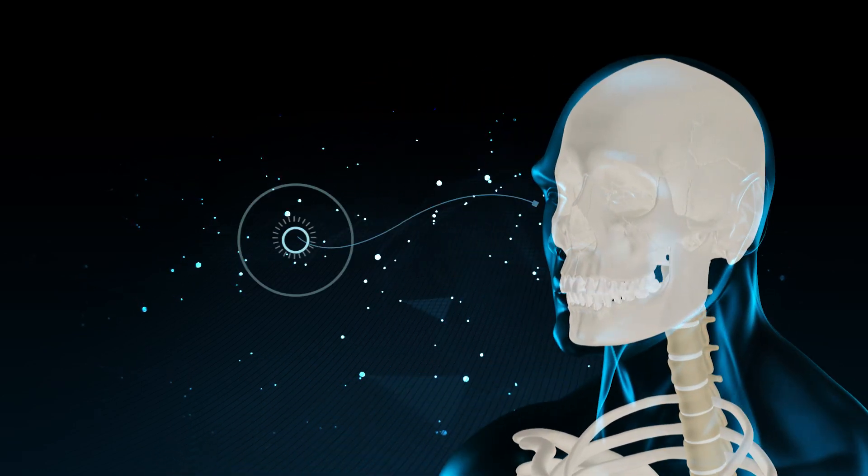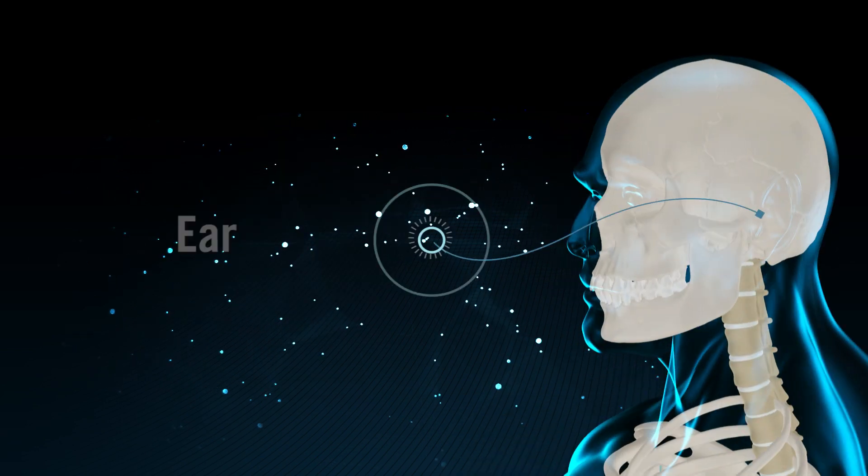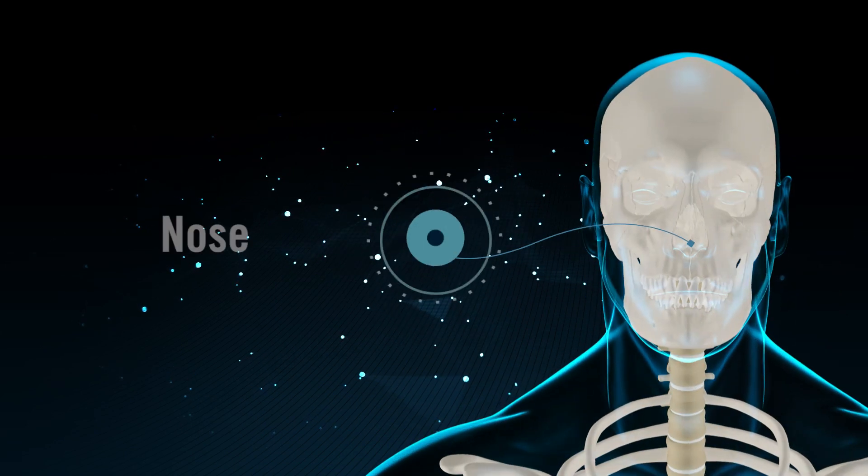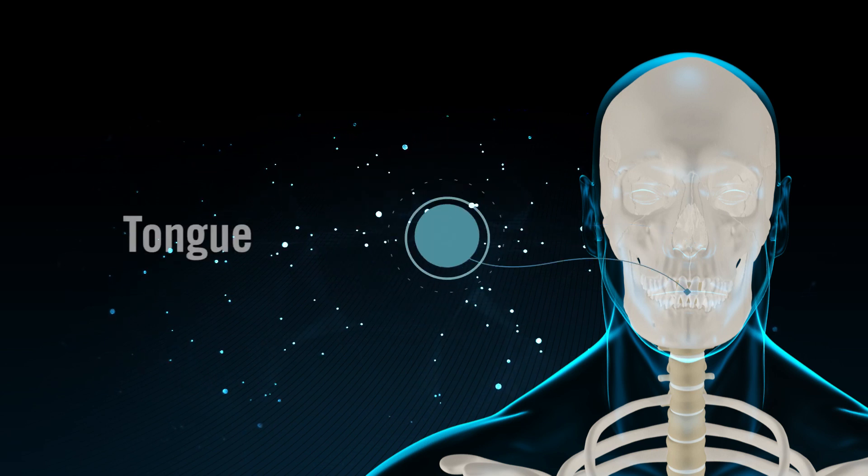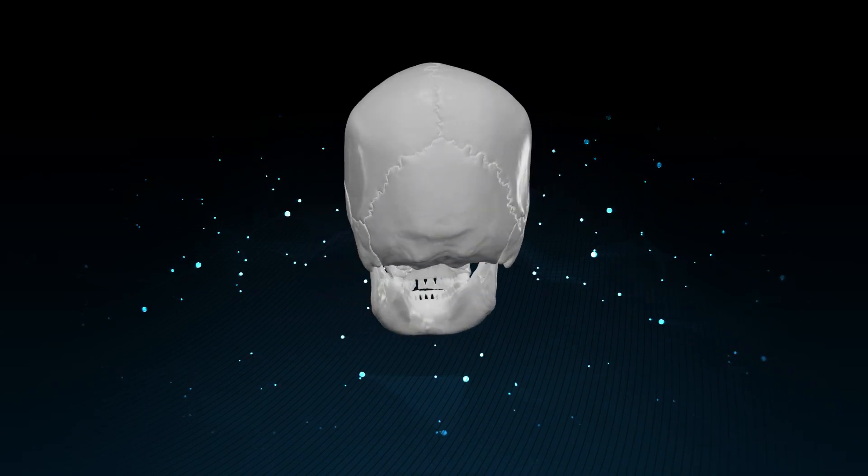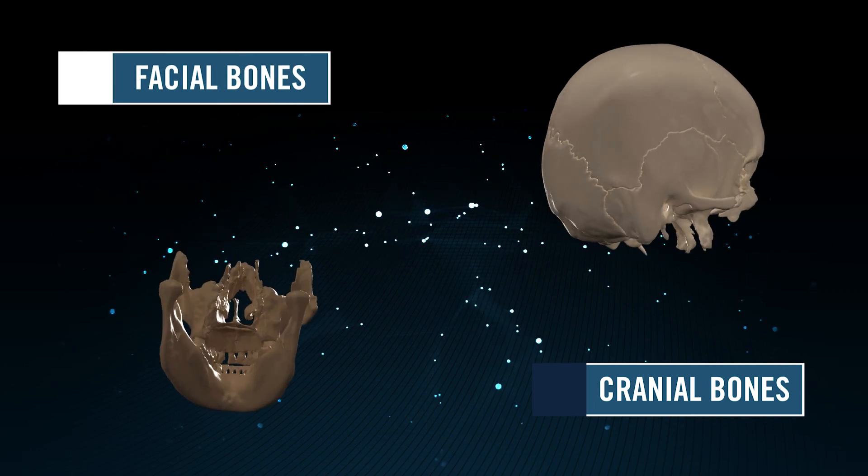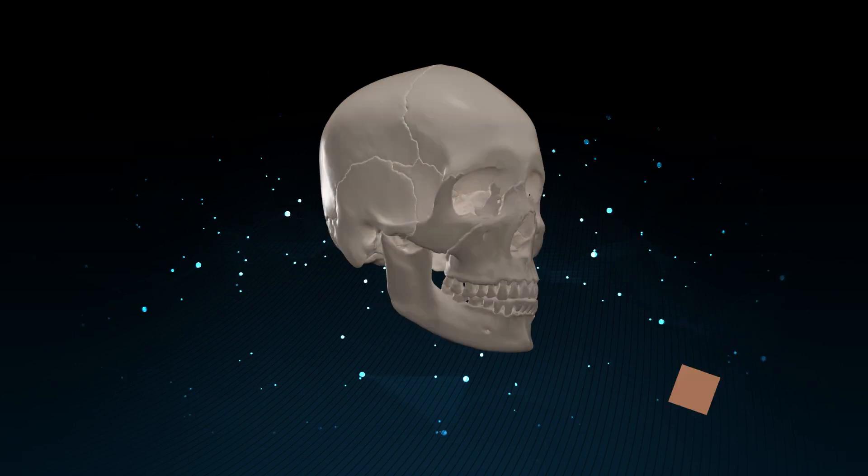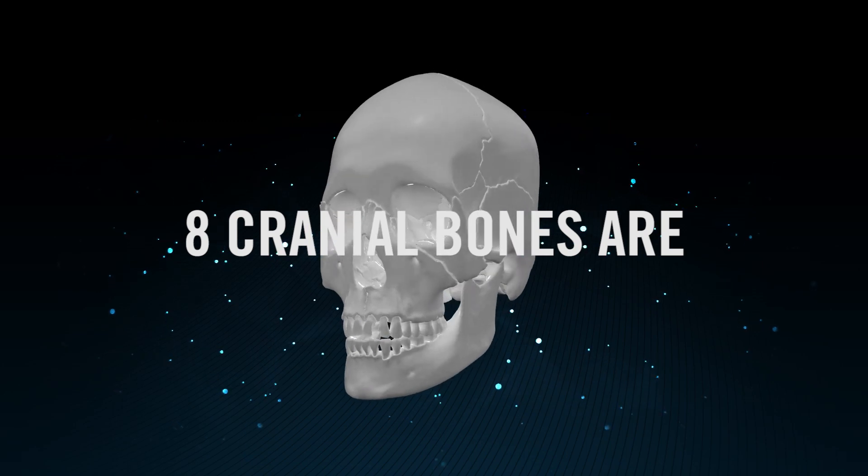Skull: The skull is the framework which supports organs of vision, hearing, smell, and taste. The skull is mainly divided into two parts: cranial bones and facial bones. There are eight cranial bones and 14 facial bones, thus the skull consists of 22 bones.